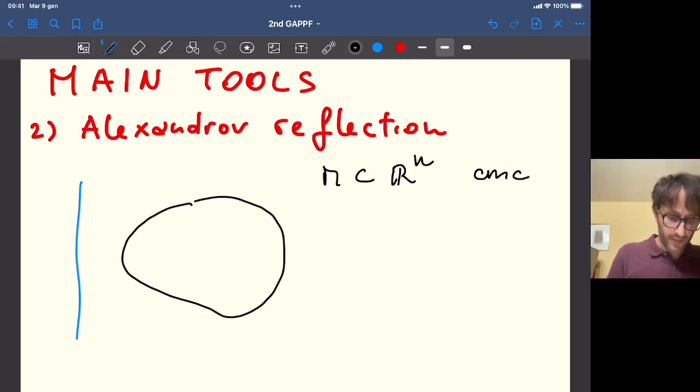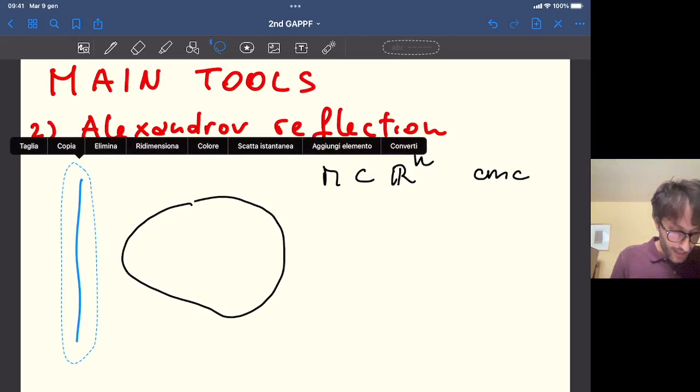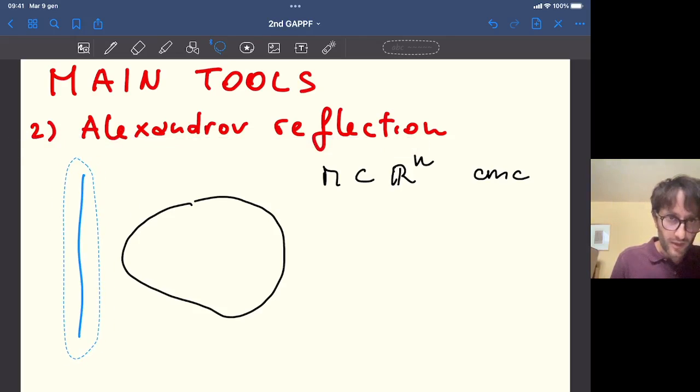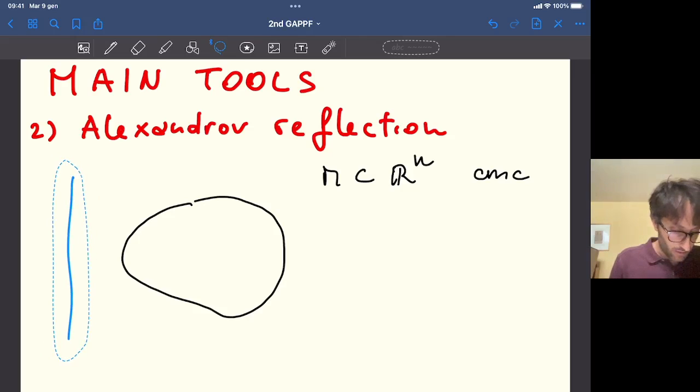The proof is pretty simple, even if very smart, and it can be thought as a clever application of the maximum principle. So it goes very briefly as follows. Take a hyperplane P. Since M is compact, we can suppose at first that there's no intersection between the hyperplane and M.